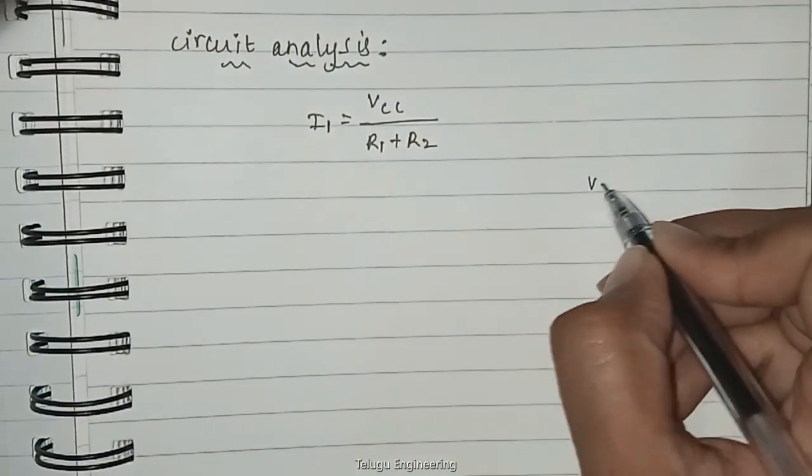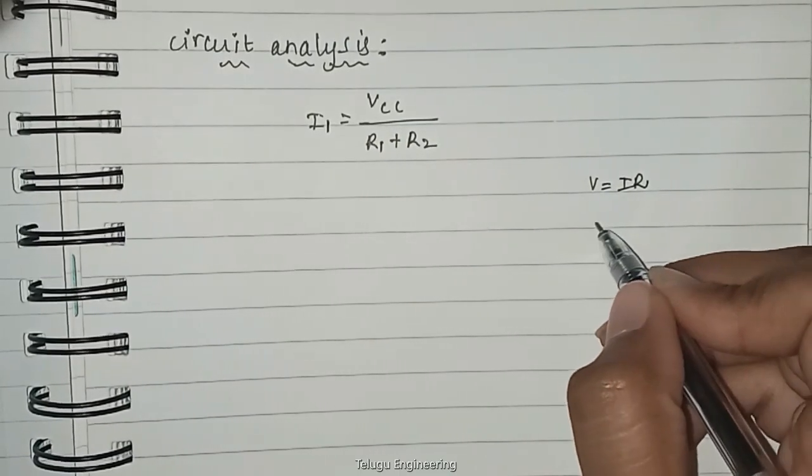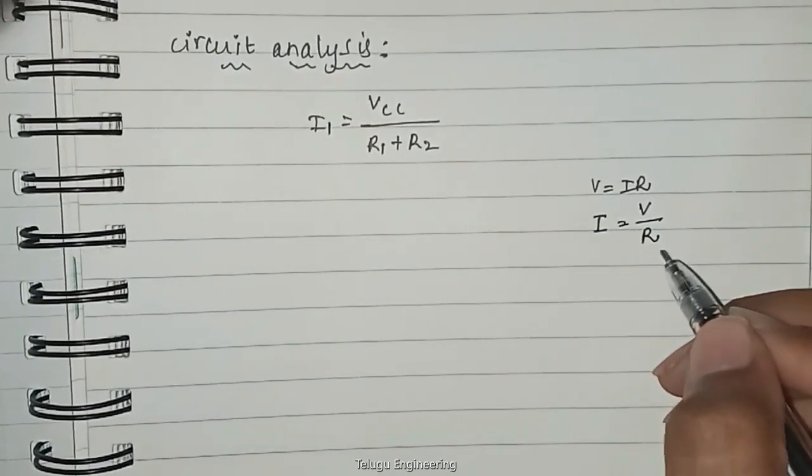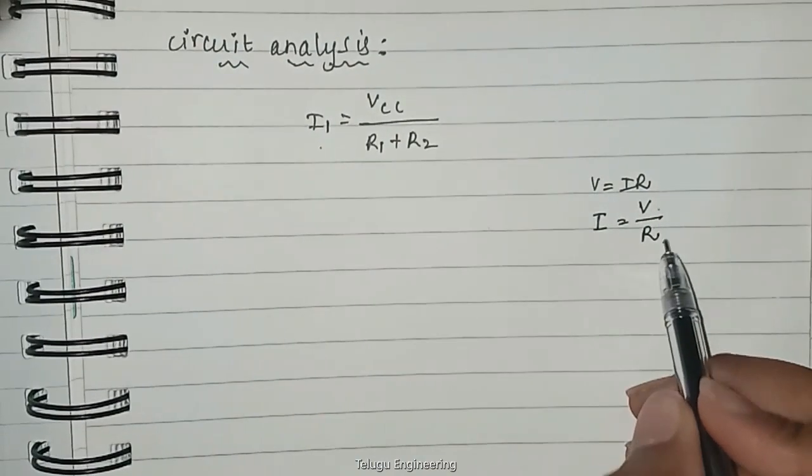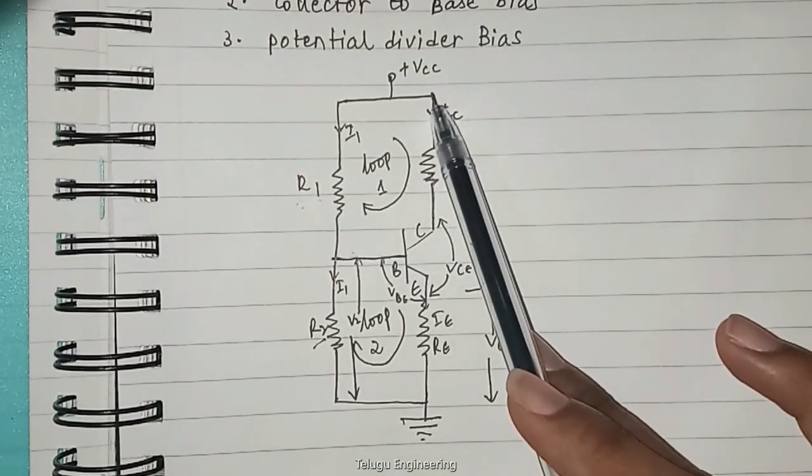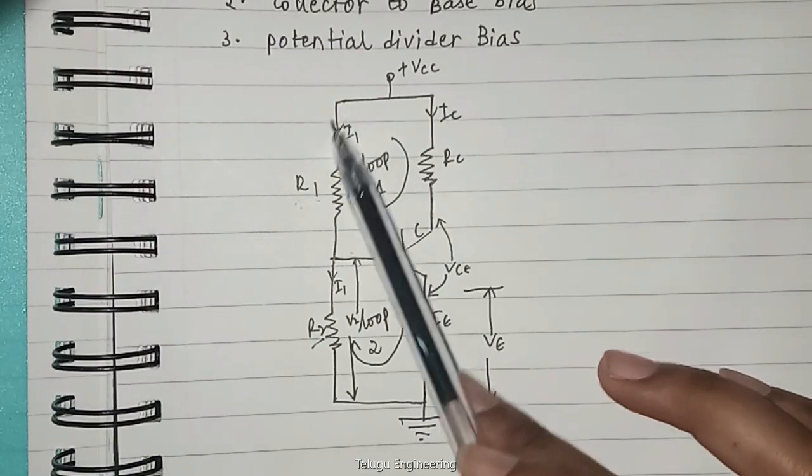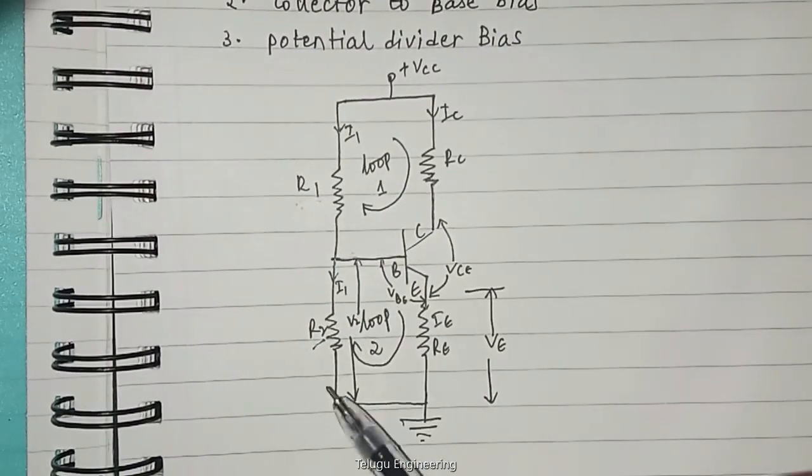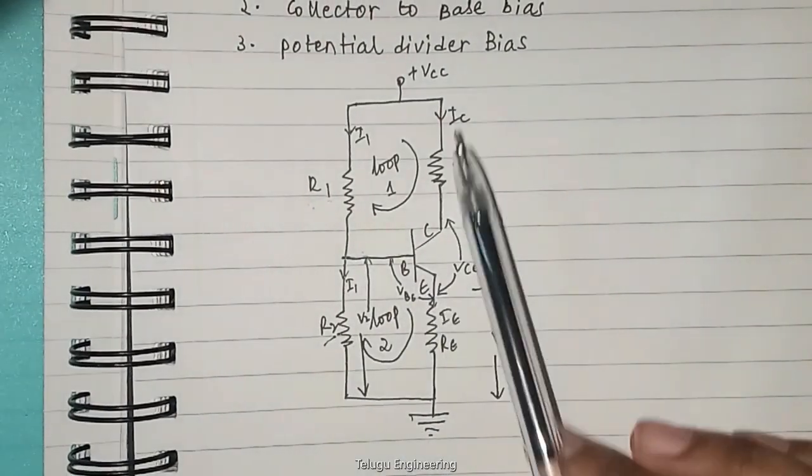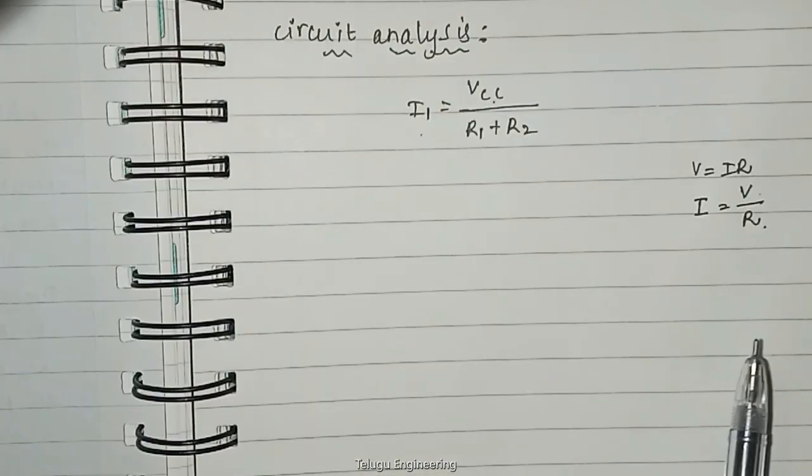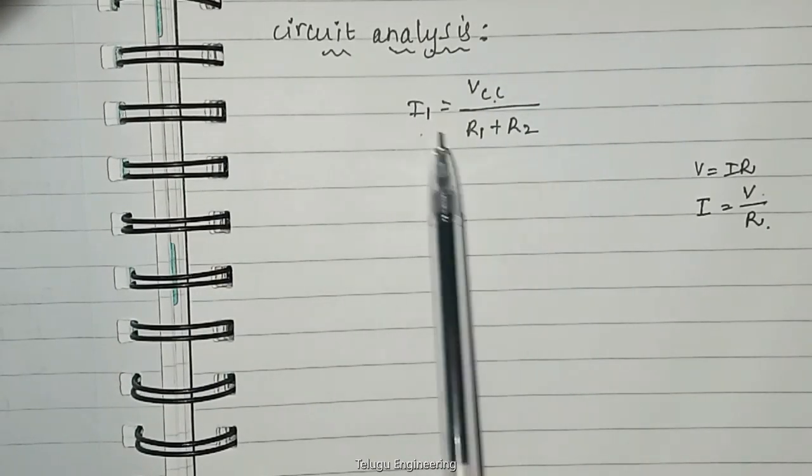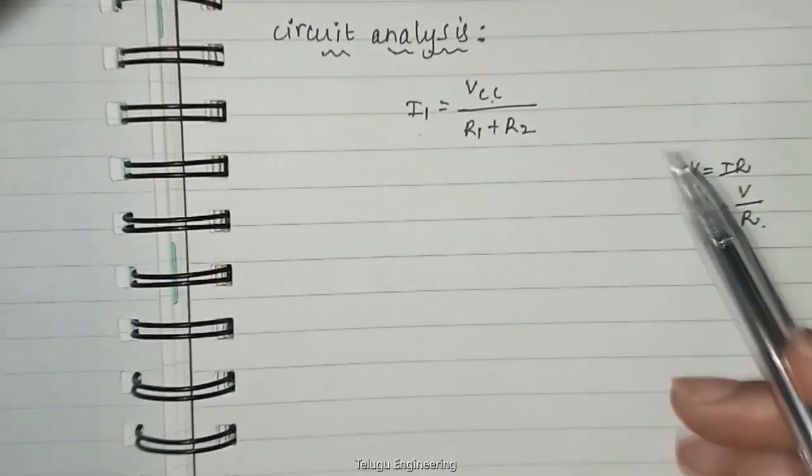So now the total current I1 is given by I1 equals VCC divided by R1 plus R2. Let me explain this one. We know that V equals IR from Ohm's law. Now we are going to write the current I1, so I equals V by R. Now in case of I1, voltage by resistance. The total voltage across I1 is VCC, and the total resistance across I1 is given by two resistances R1 plus R2, because these are connected in series. Therefore, I1 equals total voltage VCC by total resistance R1 plus R2. Let this be equation number one.